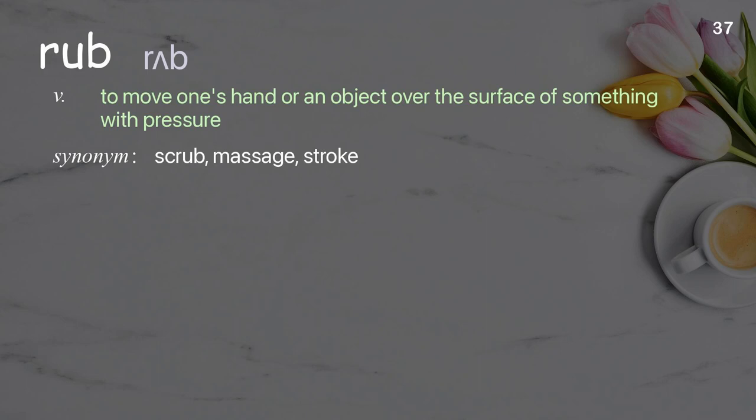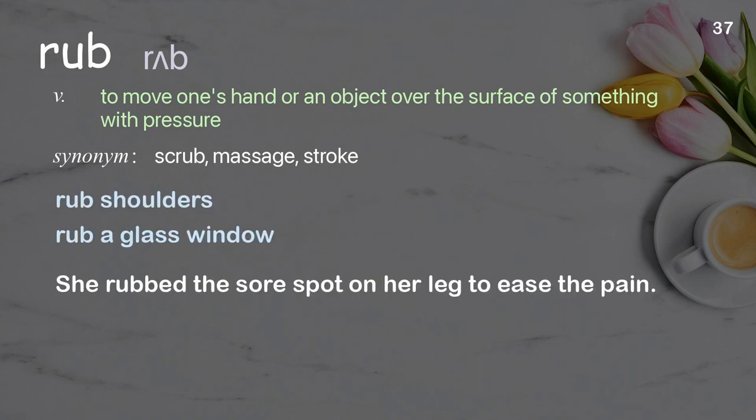Rub. To move one's hand or an object over the surface of something with pressure. Examples: rub shoulders, rub a glass window. She rubbed the sore spot on her leg to ease the pain.